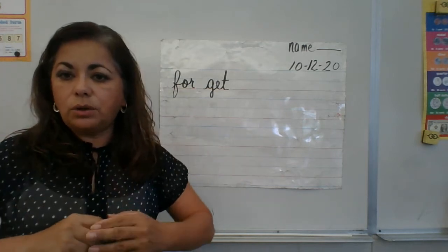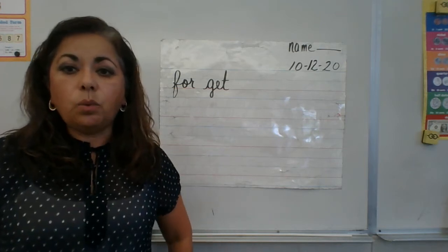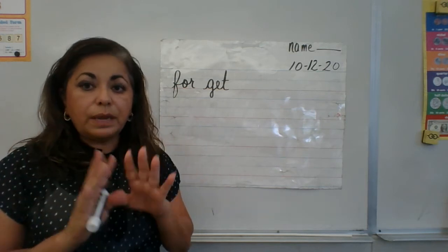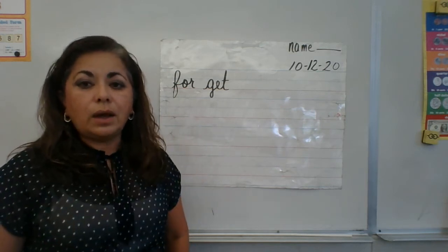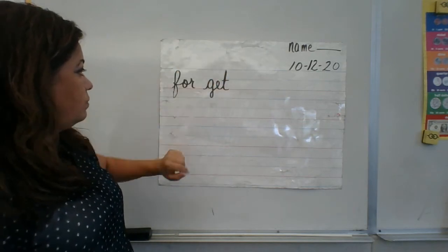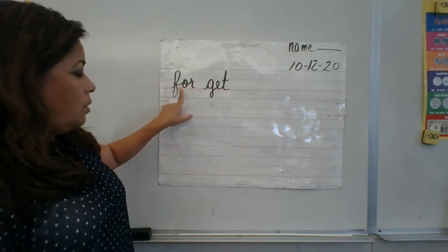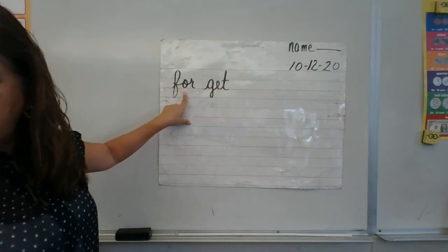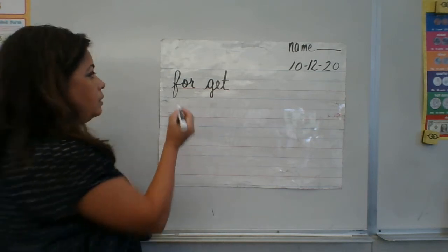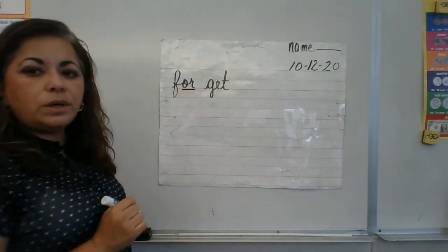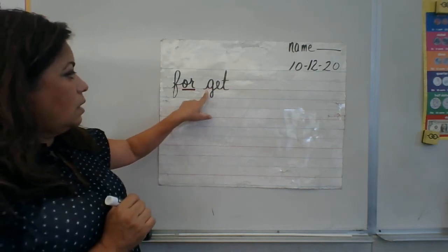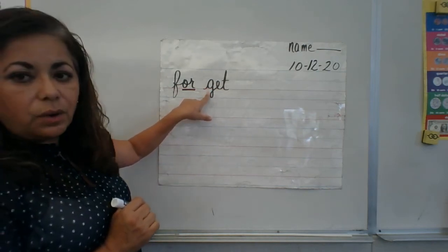This is called a compound word — two words put together to make another word. There's 'for' and there's 'get.' We have a multi-letter phonogram here, which was on your test on Friday — you should know it: 'or' as in lord. 'Got' — this is the first sound, we don't need to mark it.